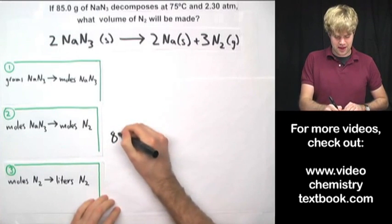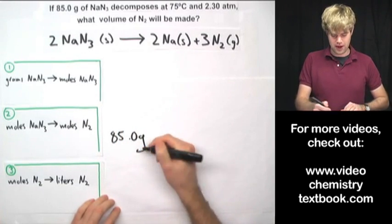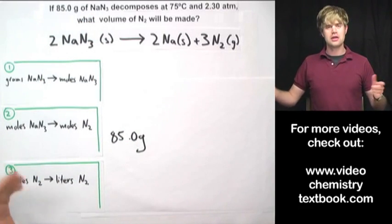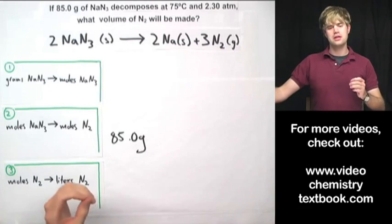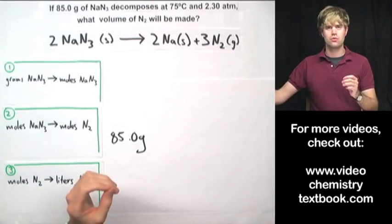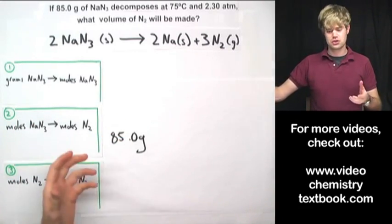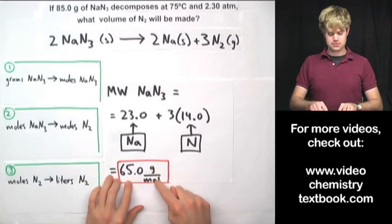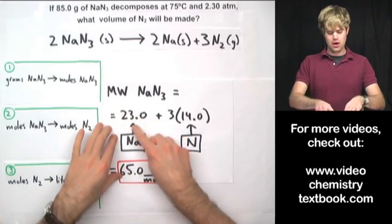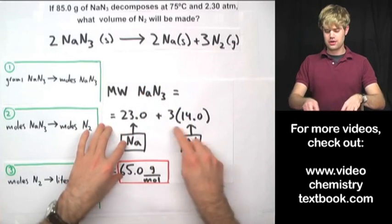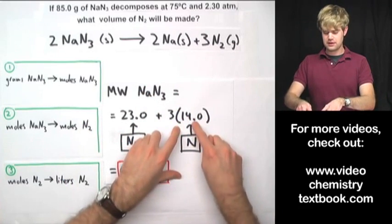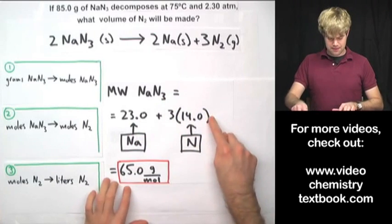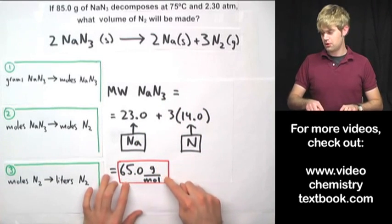We have 85.0 grams of sodium azide. To convert that into moles, I'm going to use the molar mass — the molecular weight — of sodium azide, which is 65 grams per mole. We get that by adding up the mass of sodium (one sodium) plus three times the mass of nitrogen (three nitrogens), giving us 65 grams per mole.